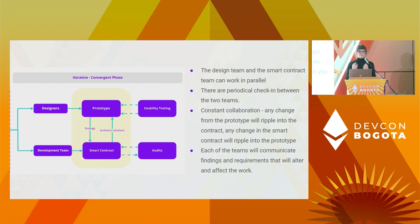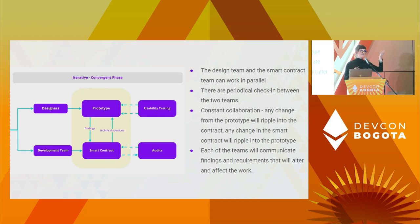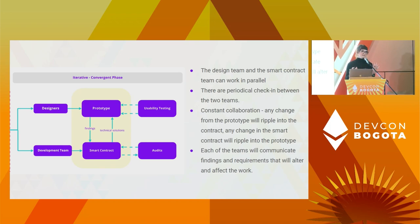The design team will test the prototype, have some findings, and communicate them to the smart contract developers. The smart contract developers will incorporate these findings and find solutions — though some technical solutions won't necessarily perfectly answer the newly discovered needs. They will also communicate these new issues and findings back to the design team. There needs to be constant back-and-forth and constant collaboration between the design team and the development team.